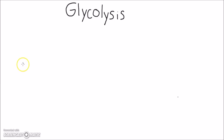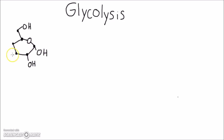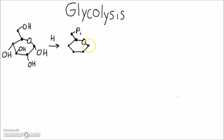Now let's draw it out. We start with glucose — a 6-carbon, 6-membered ring, where one member is oxygen. One carbon is hanging out with an OH attached, and there's an OH on every other carbon except the fifth. Hexokinase converts it to glucose-6-phosphate, adding an inorganic phosphate to that hanging carbon. Then phosphoglucose isomerase changes it from a glucose molecule to a fructose molecule.